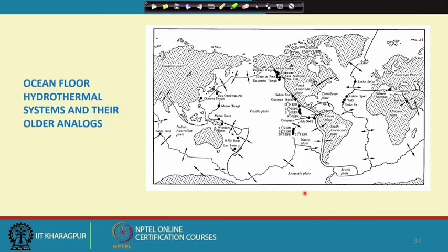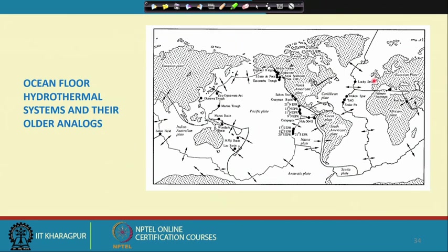We now move on to discussing a very important class of deposits. Moving from the continental setting, we will now go toward oceanic or seafloor hydrothermal systems. A diagram showing the Pacific Ring of Fire is presented, and I draw your attention to the areas indicated by solid circles.